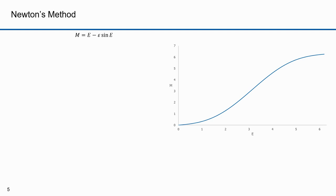The curve on the right is a plot of Kepler's equation for an ellipse. The x-axis is the eccentric anomaly, the y-axis is the mean anomaly. This red line represents a value for m, the mean anomaly — I picked a value of 3. The point where the red line intersects the curve gives the result I'm looking for. Dropping a line down to the x-axis gives the corresponding value of e, the eccentric anomaly. Kepler's equation is transcendental, so I can't solve for e algebraically, and this geometric method isn't very precise.